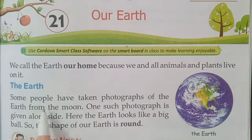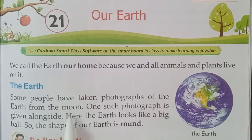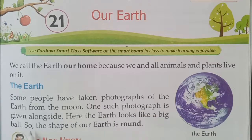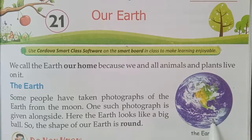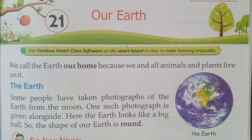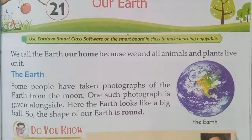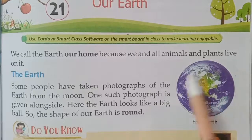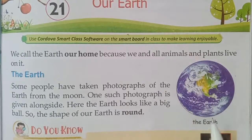The earth. Some people have taken photographs of the earth from the moon. One such photograph is given alongside. Here, the earth looks like a big ball. So, the shape of the earth is round. This photograph of the earth was taken from the moon, and you can see that the earth looks like a ball — it is round in shape.